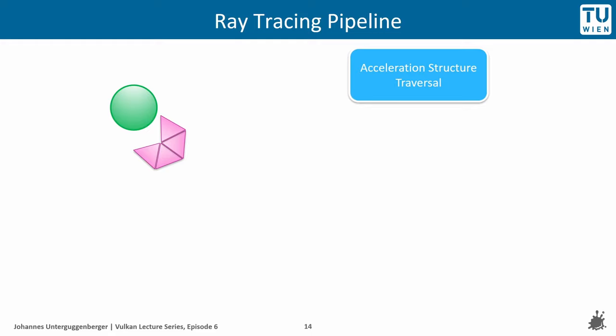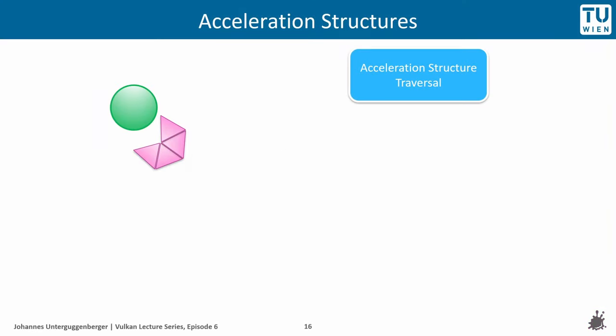Now let us focus on acceleration structures and see what we can put into them and how we can construct them. We need to get more precise about the type of acceleration structure used during our initial example. As we will see in a moment, there are actually two types of acceleration structures. The type shown here is a top-level acceleration structure, which refers to a set of geometries — typically a whole 3D scene like the level of a game.